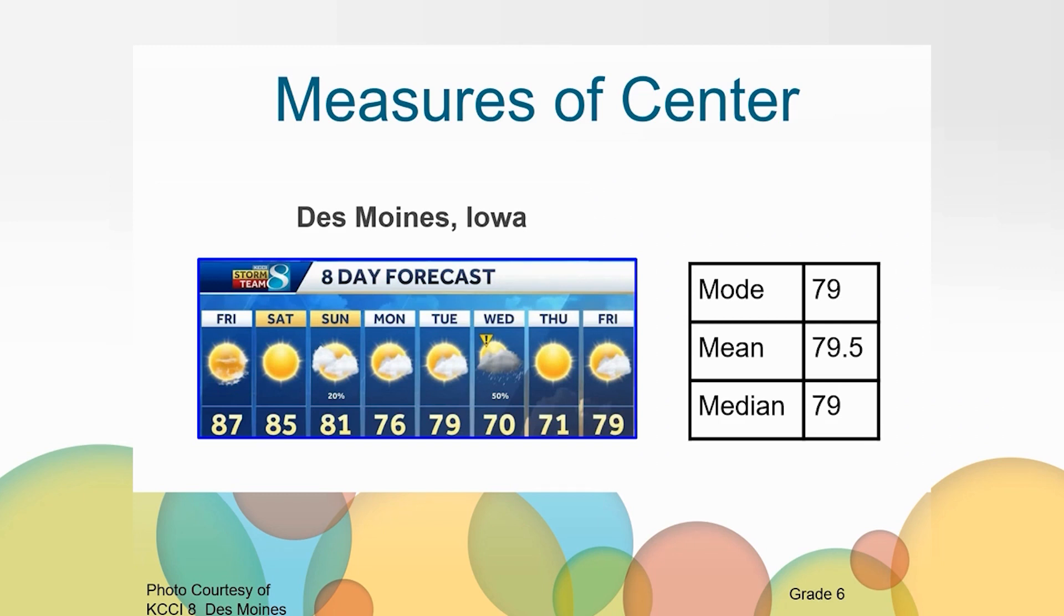Now we have found the mode, mean and median for this set of data. Wow, these measures of center are either the same or very similar. This will not always be the case. These data points are relatively close together, meaning the temperature is fairly similar. You probably would pack light summer clothes for the entire trip. These measures of center are practically the same.